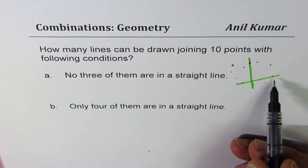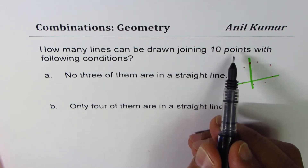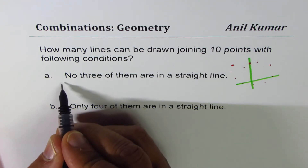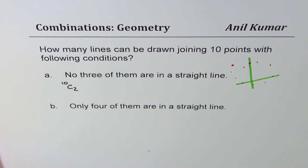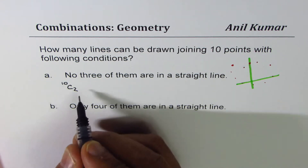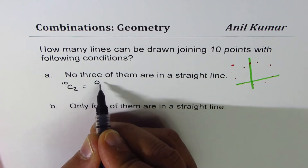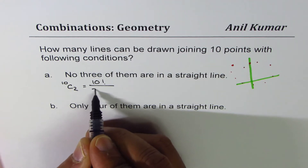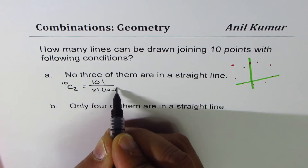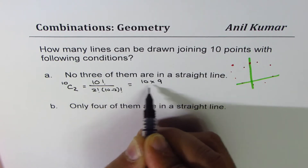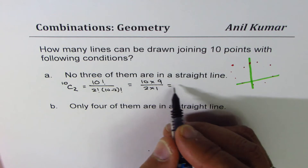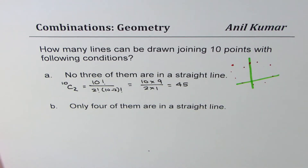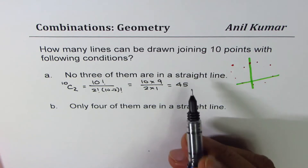To draw a line we need two points, and we have 10 points. Taking two together, the total number of combinations is 10C2. We can calculate this using the formula: 10 factorial divided by 2 factorial times (10 minus 2) factorial, which equals 10 times 9 divided by 2 times 1 — that is 5 times 9, which is 45.